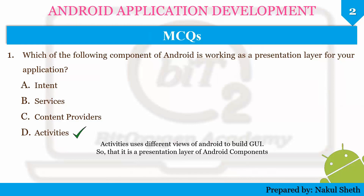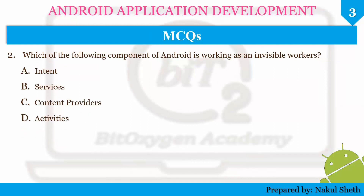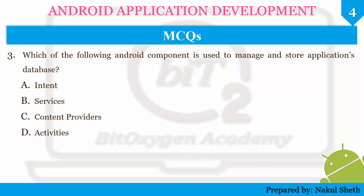Next question: which of the following component of Android is working as invisible workers? The options are Intent, Services, Content Providers, and Activities. The correct answer is Services. Services are known as invisible workers in Android because services run as background processes and are not visible to users.